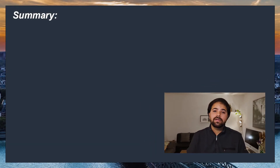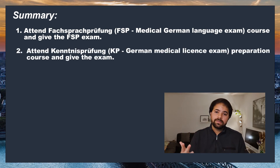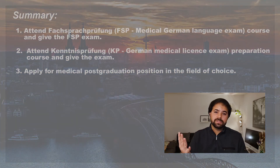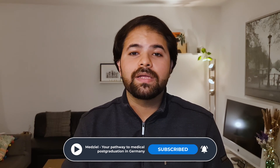So that was a short summary of the process. In upcoming videos we'll discuss these topics in much more detail. This is a long and complicated process and patience is key. To summarize the steps in Germany: attend your FSP course, give the FSP exam, attend your KP course, give your KP exam, and once you have cleared all of it, apply for a post-graduation position. For more information, subscribe to the channel, visit our website, and follow us on Instagram and Facebook.